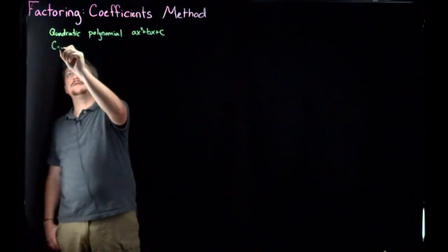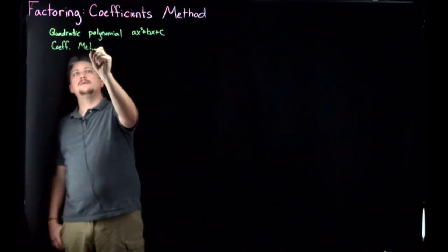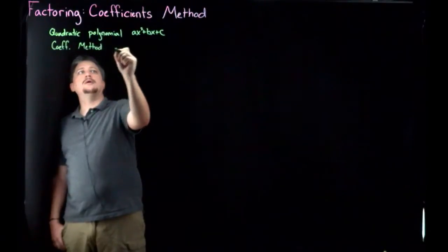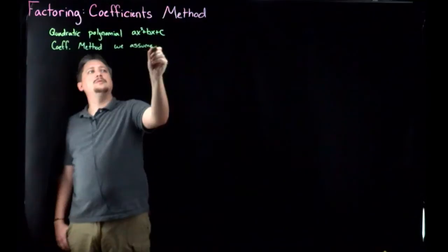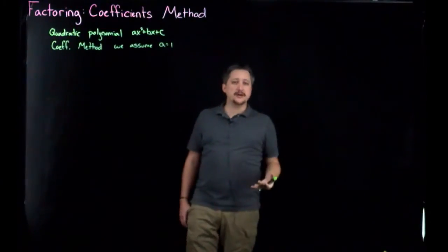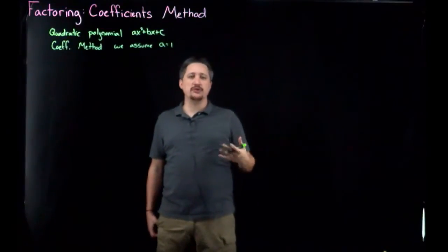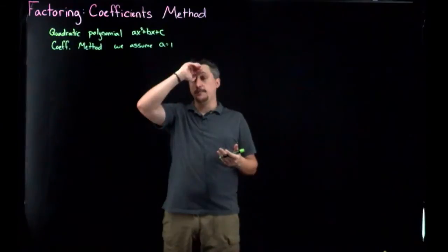So for the coefficient method, we assume a equals 1, meaning that this is only going to work for what we call monic quadratic forms, or quadratics where the leading coefficient is 1.